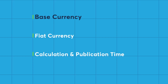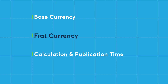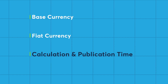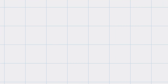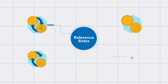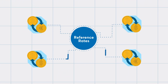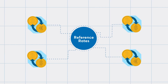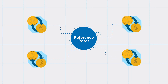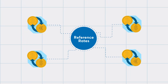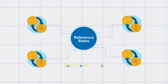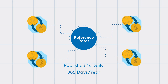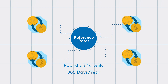Let's discuss three parameters of the reference rates and indices: the base currency, the fiat currency, and the calculation time and publication time. Each reference rate aggregates the trade flow of major cryptocurrency spot exchanges during specific one-hour calculation windows and is published once per day, every day, including weekends and holidays.